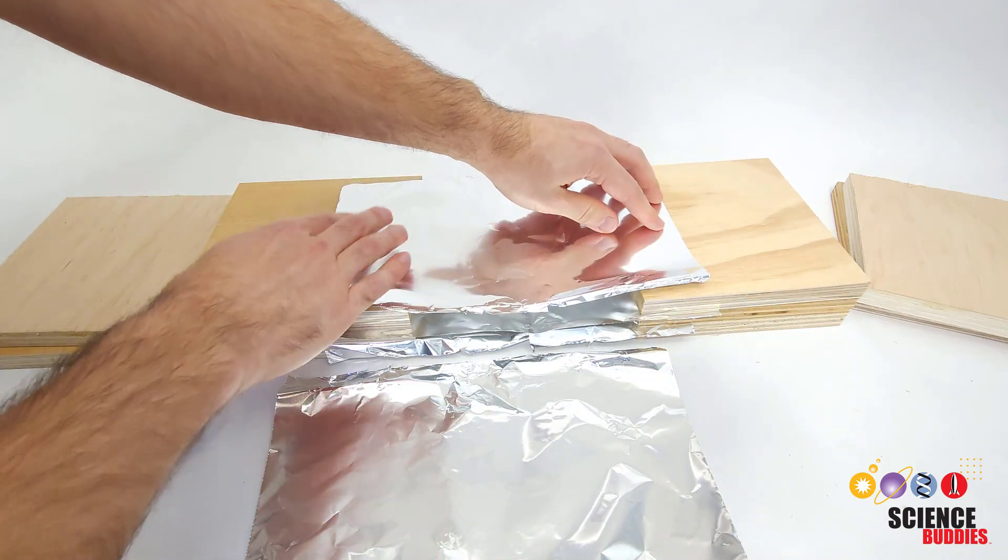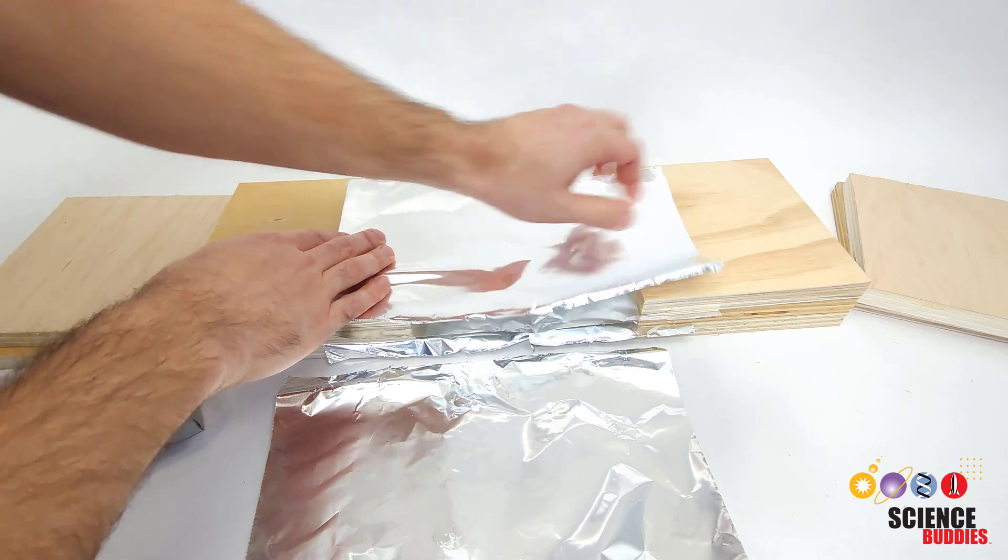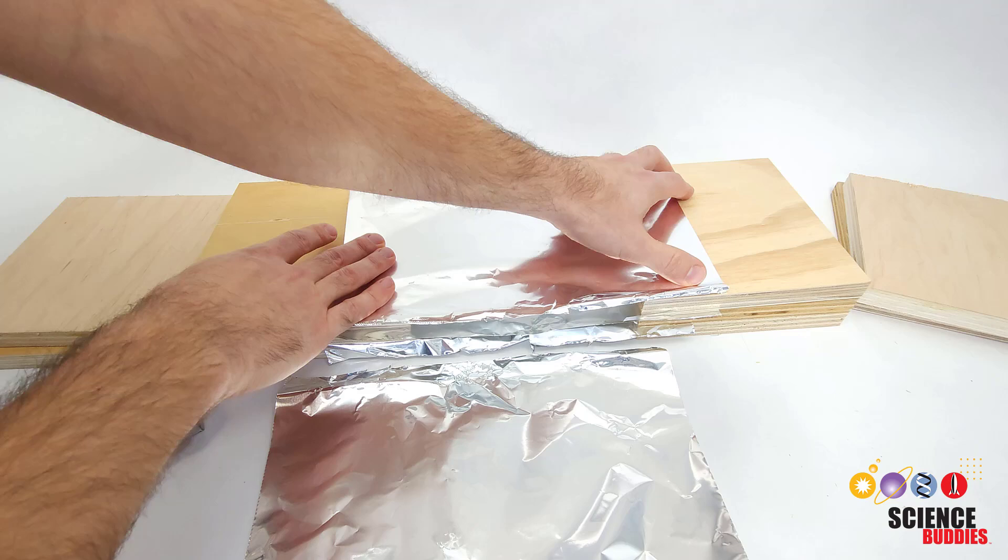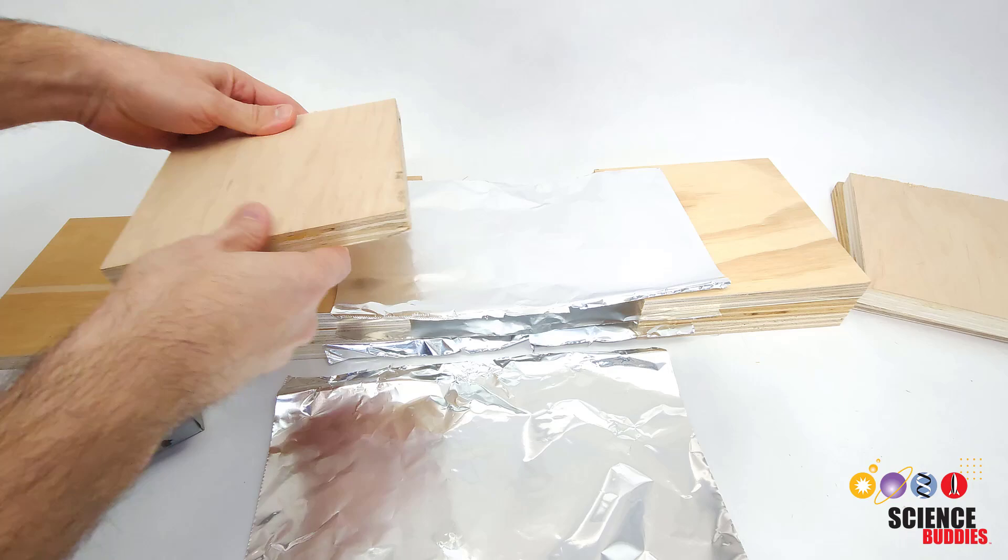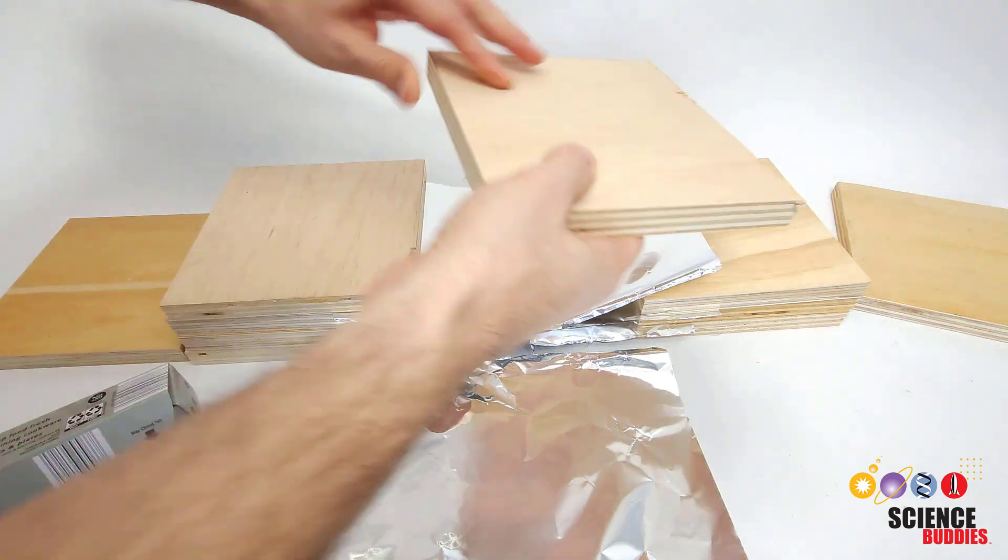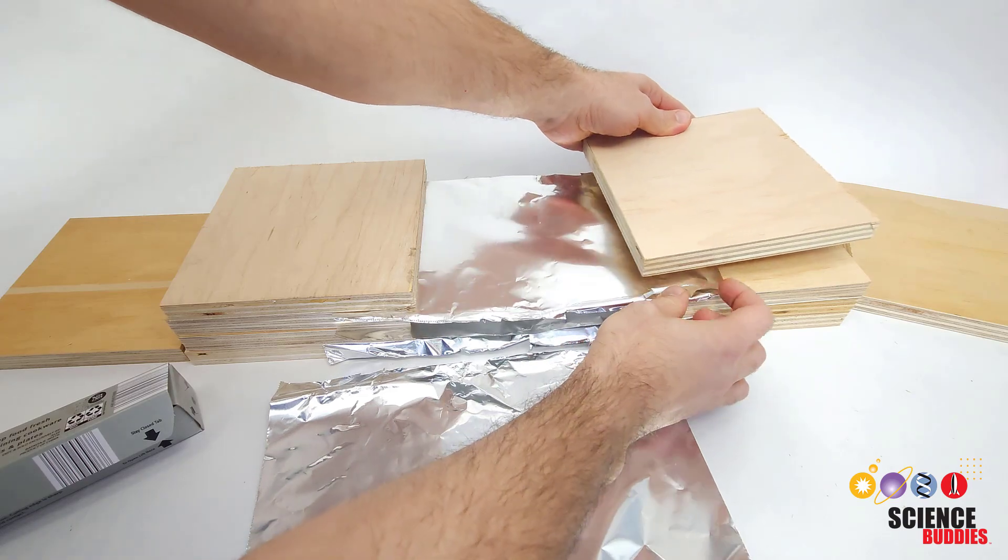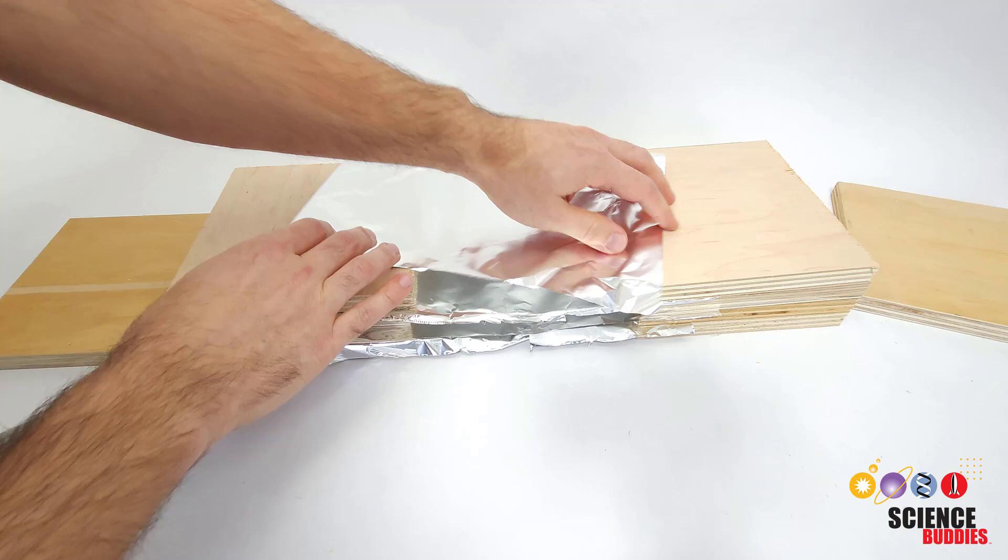There's my second layer, third layer. When you put each layer on, make sure you pull it tight. Don't let the aluminum foil start sagging down like that, so I'm making sure it's pulled tight. There's my third layer, and then I am going to add my fourth layer, and I am almost ready to test.